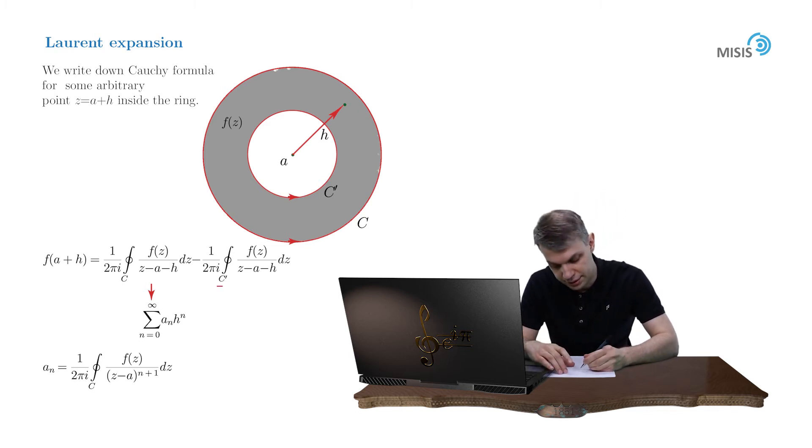Now the second integral. Actually, it is expanded in quite a similar manner, but with a small difference. The point here is that the modulus of Z minus A is less than the modulus of H, because H lies outside the small circle.